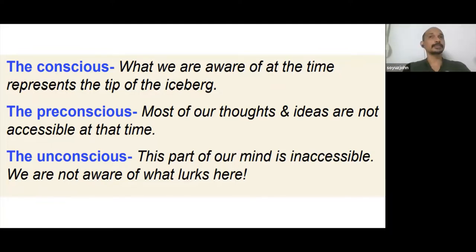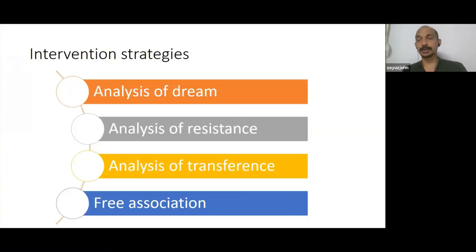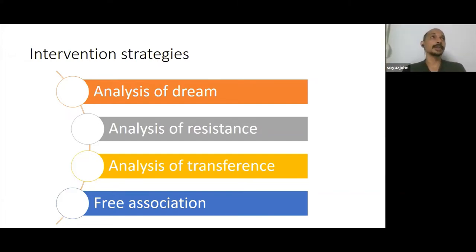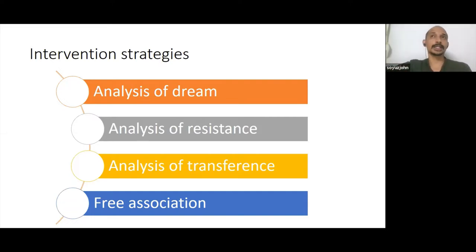This theory explains how a problem arises and is maintained, giving a theoretical understanding of the problem. The solution it proposes is that if the person gets to know what is in their unconscious mind and gains insight, that knowing itself will resolve many problems. Different strategies are used: analysis of dreams, analysis of resistance, analysis of transference, and free association. Through these, the therapist helps the person discover what is in the unconscious mind. Once that person develops insight, the problem can be resolved.